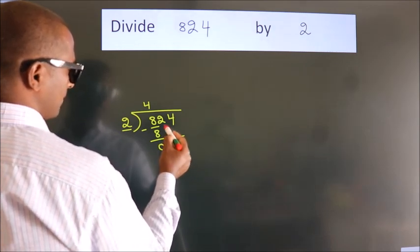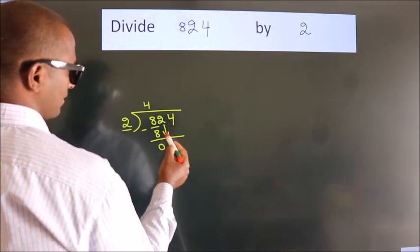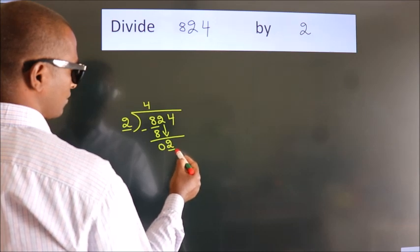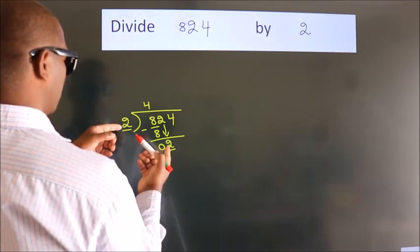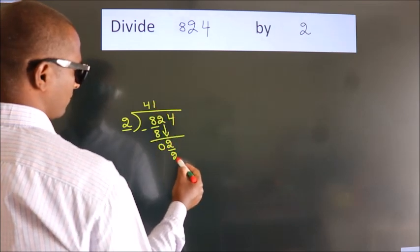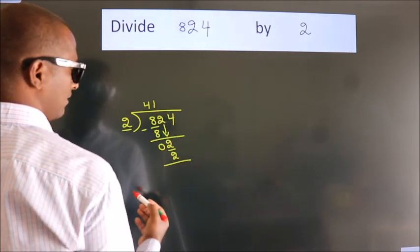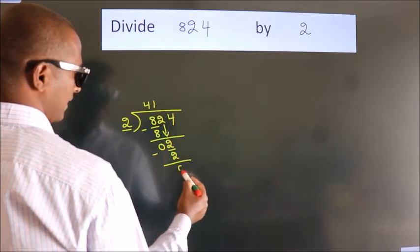After this, bring down the beside number. So 2 down, so 2. When do we get 2? In 2 table, 2 ones, 2. Now we subtract, we get 0.